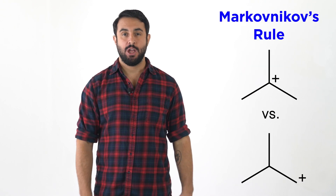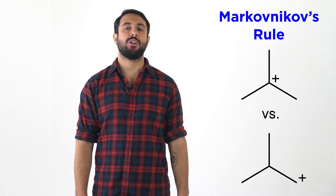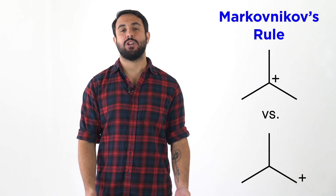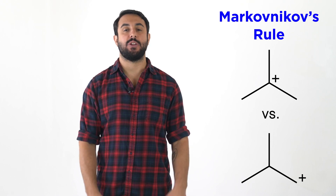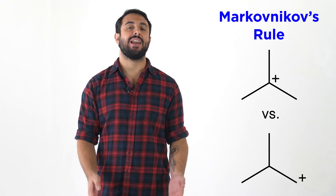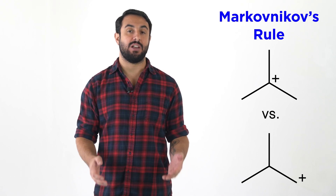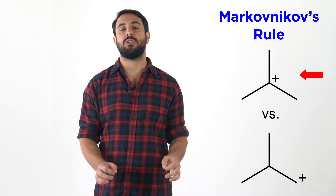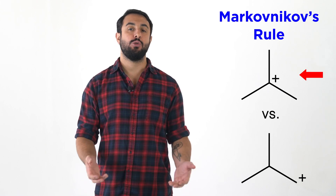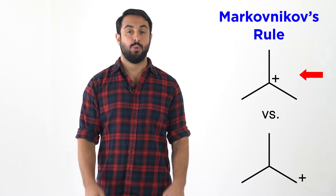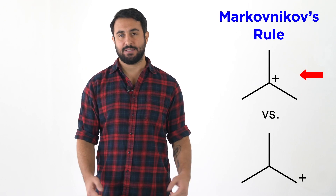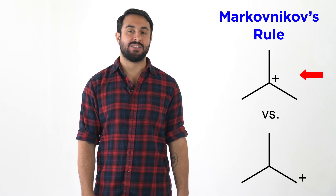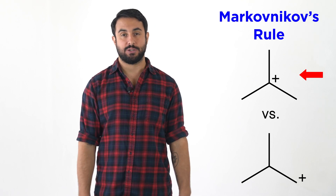Professor Dave and Chegg here. We know about Markovnikov's rule, which dictates that in a reaction like electrophilic addition, when a carbocation intermediate is formed, it is specifically the more substituted carbocation of the two that are possible which will form. But why is this? Let's look at carbocation stability to understand how this works.